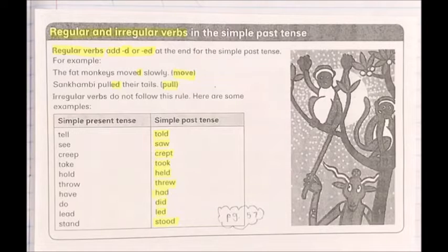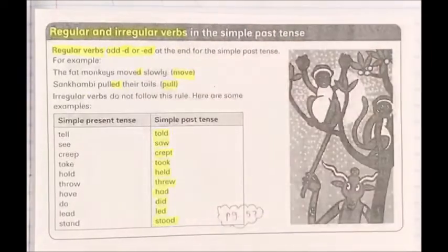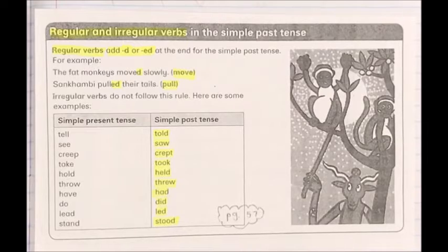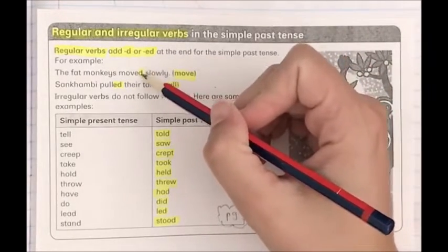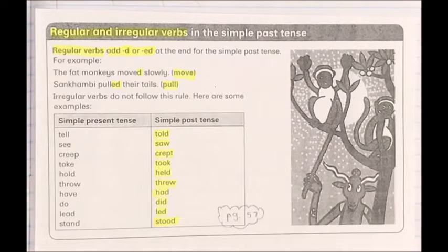We have regular verbs, which we in the past tense just add a D or ED at the end of the word. For example, the monkeys moved. Slowly the word was move, so we only added a D.